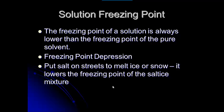An example of that is when we put salt on streets to melt ice or snow — it lowers the freezing point of the salt/ice mixture. When we add the salt, it lowers the freezing point. That's why they salt the roads before it snows or does freezing rain, because it lowers that freezing point of the ice by a few degrees, and typically that's enough for us to get around on the roads or at least melt a good bit of it.